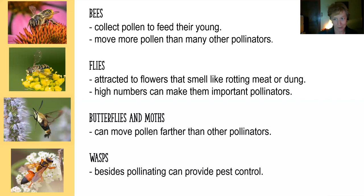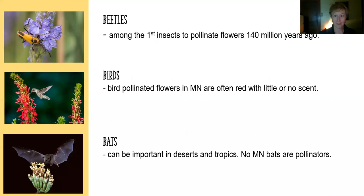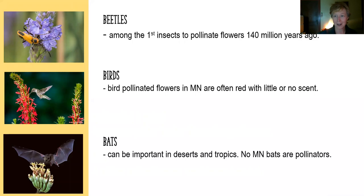Wasps, besides pollinating, can be really important for pest control. In addition to getting nectar from flowers, wasps go out and eat insects that might be pests on crops or in gardens. Beetles aren't covered extensively in the cards, but they are present on flowers — anyone out looking at flowers in Minnesota will likely see a goldenrod soldier beetle. Beetles are actually among the first insects that pollinated flowers when they first evolved around 140 million years ago.